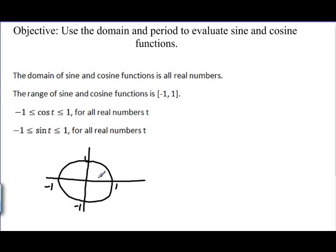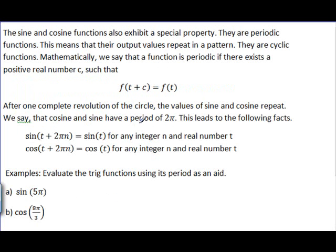So if you get a sine or cosine value that's either larger than 1 or smaller than negative 1, you know you've done something wrong. Now let me talk about another property that sine and cosine functions possess, and that is something called periodic.